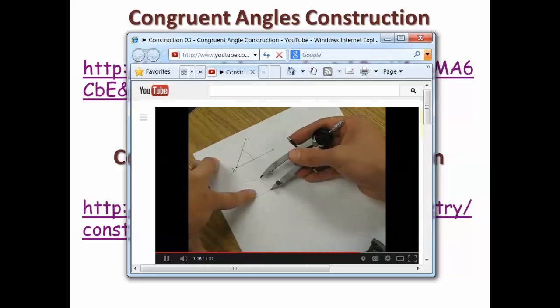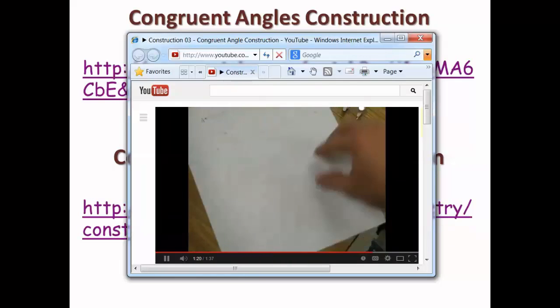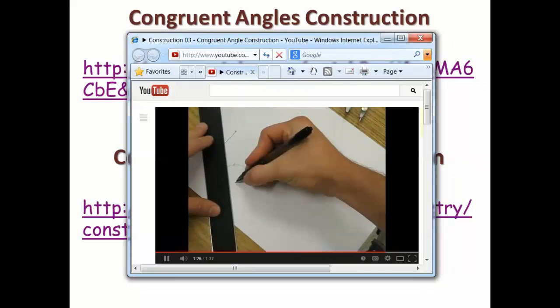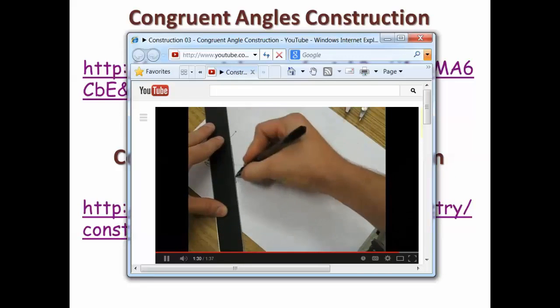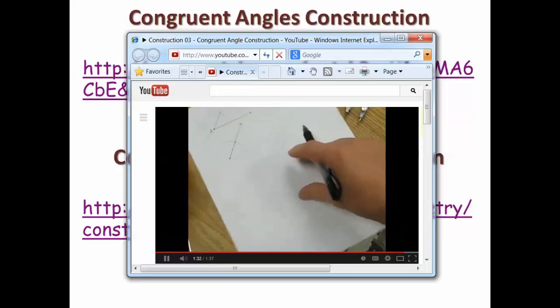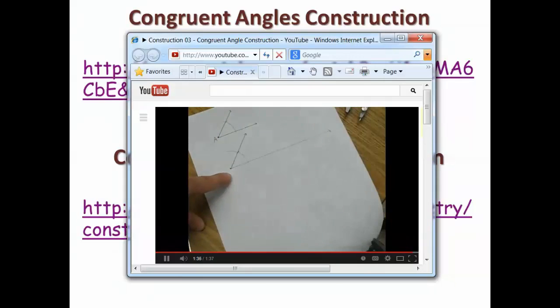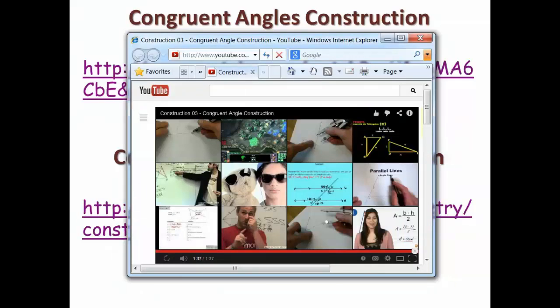Then we can copy that or transfer that down here to our new position. We can use our straightedge now to connect our endpoint of our ray with the mark of our arc, and now we have two congruent angles. Now normally what you would do after you got those two congruent angles is you would use your protractor to confirm that they were congruent and that you did your construction correctly.